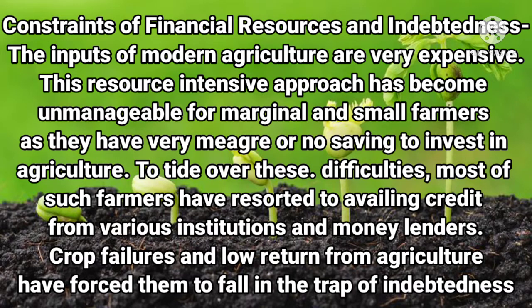The next constraint is financial resources and indebtedness. The inputs of modern agriculture are very expensive for marginal and small farmers. Crop failures and low returns from agriculture have forced them to fall into the trap of debt. Marginal and small farmers have to take loans from banks, and if the crop fails in a particular season, they are unable to repay the loan, which is a very big problem for them.